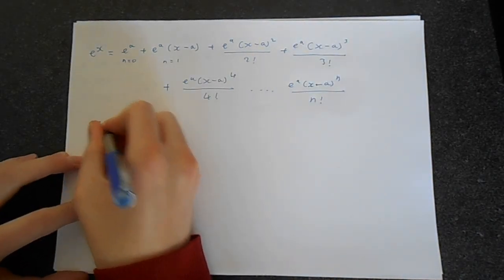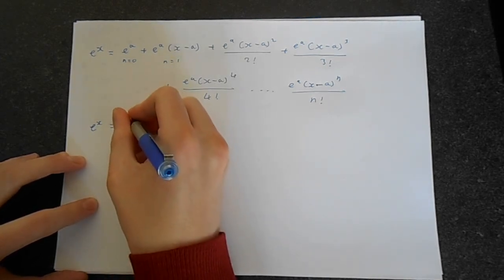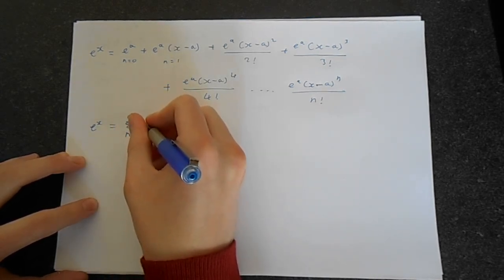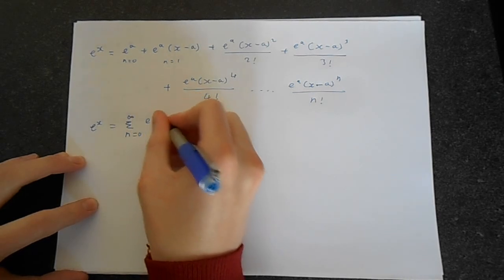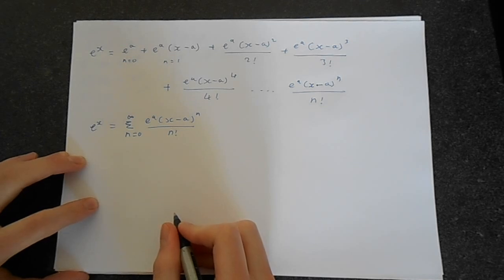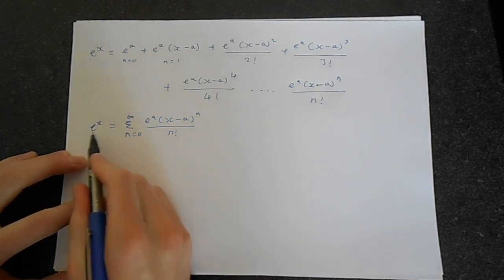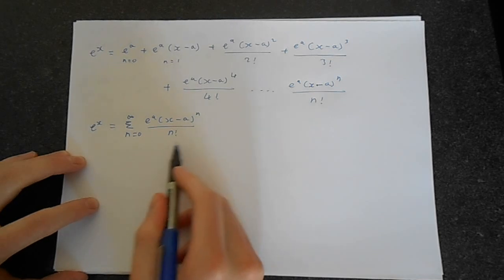We can usually condense these right down and basically say that, in this case, e to the x is equal to the summation of n equals 0 to infinity of e to the a, x minus a to the power n over n factorial. This is the Taylor series of e to the x at any value a.